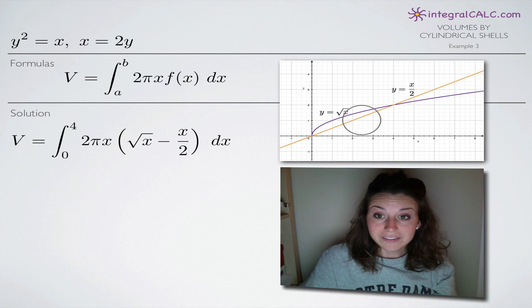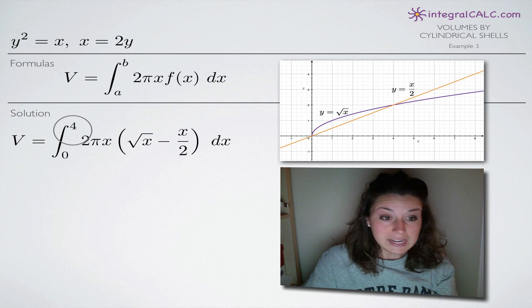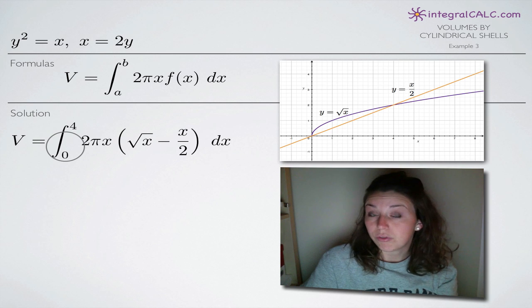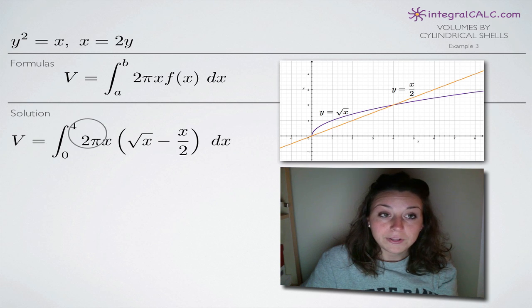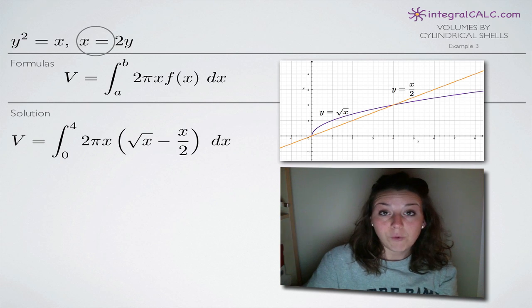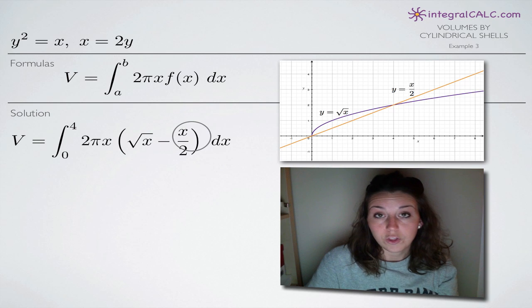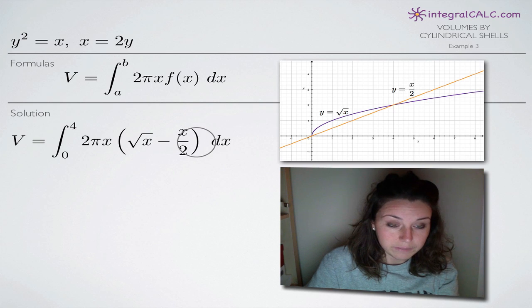If you don't have a graphing calculator, you've already found your limits of integration 0 and 4. Just pick any point between 0 and 4 — 1, 2, or 3 — plug it into both equations, and see which one gives the higher value. That will be the greater function, which goes first, and you subtract the lower function from it.